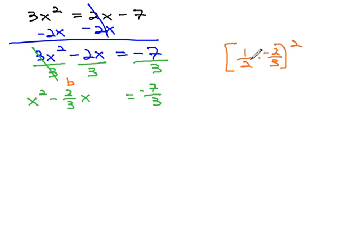This is kind of nice because we can reduce the 2's, and we're just left with negative 1 over 3 squared. Squaring the negative 1 is positive 1. Squaring the 3 is 9. And so, we end up adding, write it below here, adding 1 ninth to both sides of the equation.